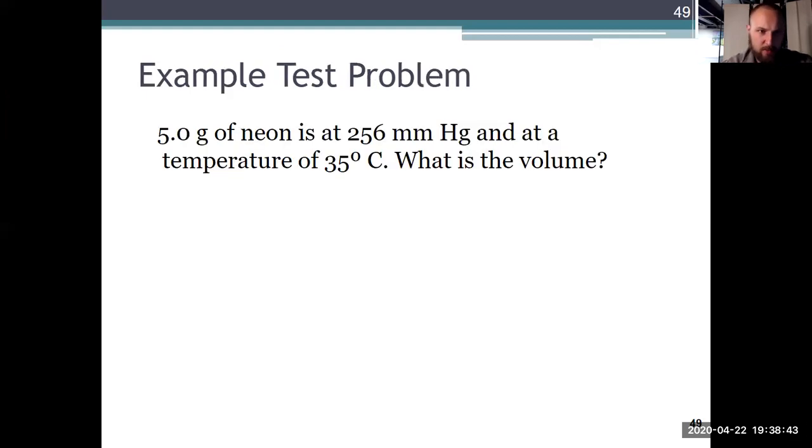Which brings us to another example problem. Talking about five grams of neon with a pressure and a temperature, we are asked to solve for the volume. What you need to do here is convert the pressure to atmospheres, convert the temperature to Kelvin, and then use the equation from the previous slide to solve for the volume. The information you need that's not shown here is the molar mass of neon. Final answer for this problem is 19 liters. But again, I'll upload a video, supplementary video, showing how to solve this problem.